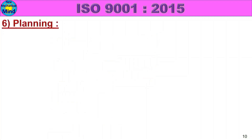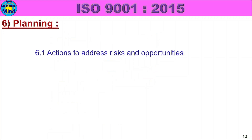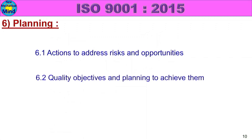Planning has 3 subclasses: 6.1 — Actions to Address Risks and Opportunities; 6.2 — Quality Objectives and Planning to Achieve Them; 6.3 — Planning of Changes. Let's look at each one in detail.